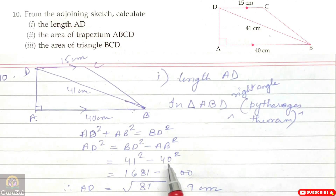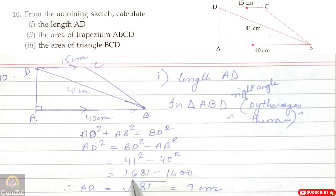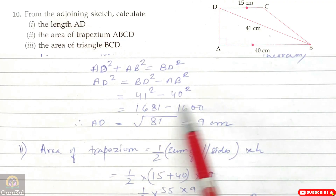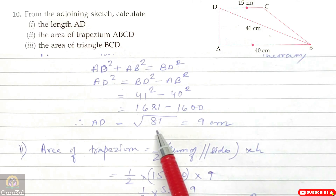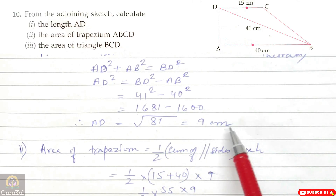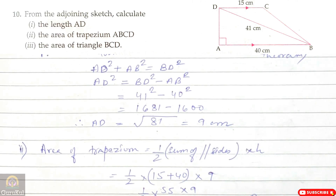First, find length AD. Triangle ABD is a right-angle triangle with angle A = 90 degrees and DB as the longest side. Using Pythagoras theorem: AD square + AB square = BD square. AD square = BD square minus AB square = 41 square minus 40 square = 1681 minus 1600 = 81. Therefore AD = square root of 81 = 9 cm.